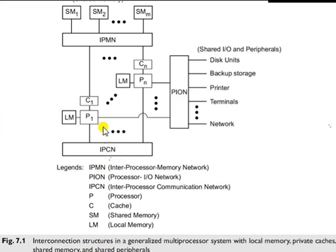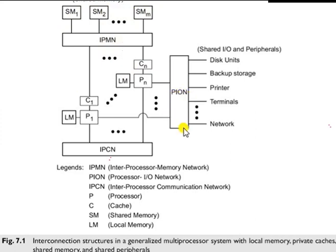In summary, processors P1 to PN are connected with local memory and cache. Shared memories are accessed through IPMN. There is also a PION and an Inter-Processor Communication Network (IPCN).